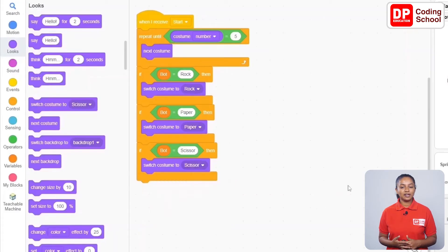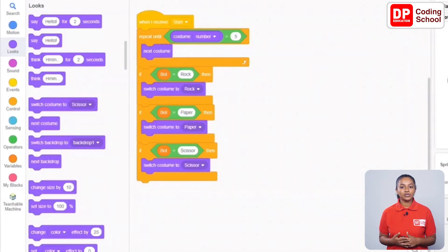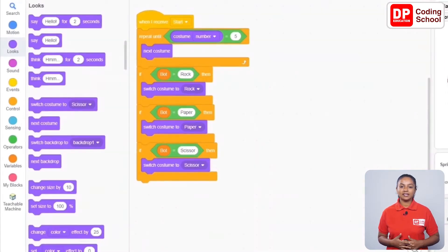Okay, next is to create the code to change the costume of the paper sprite in the same way. From here, let's select the paper sprite and create the code.